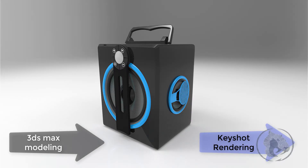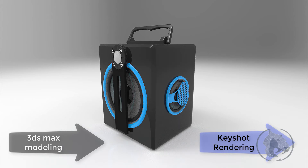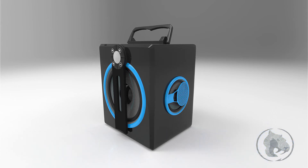Hey everyone, this is Max from CGMAX7 and I'm here to make a tutorial on how to do modeling in 3ds Max 2017. We're going to create a speaker from scratch, and once we complete the speaker, we're going to jump into KeyShot and do some rendering, like creating a turntable. In this tutorial you will learn how to keep the mesh in quad and how to do proper basic product modeling. Let's get started with the modeling stage.